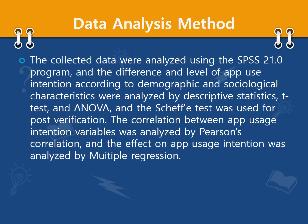Data Analysis: The collected data were analyzed using the SPSS 21 program, and the difference and level of app use intention according to demographic and sociological characteristics were analyzed by descriptive statistics. T-test and ANOVA were used for group comparisons. The correlation between app use intention variables was analyzed by Pearson correlation, and the effect on app use intention was analyzed by multiple regression.